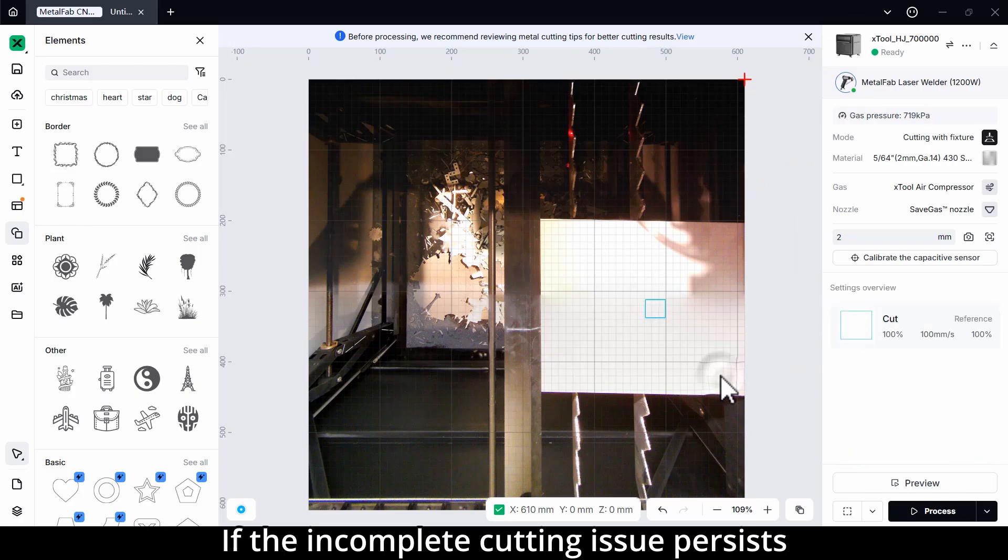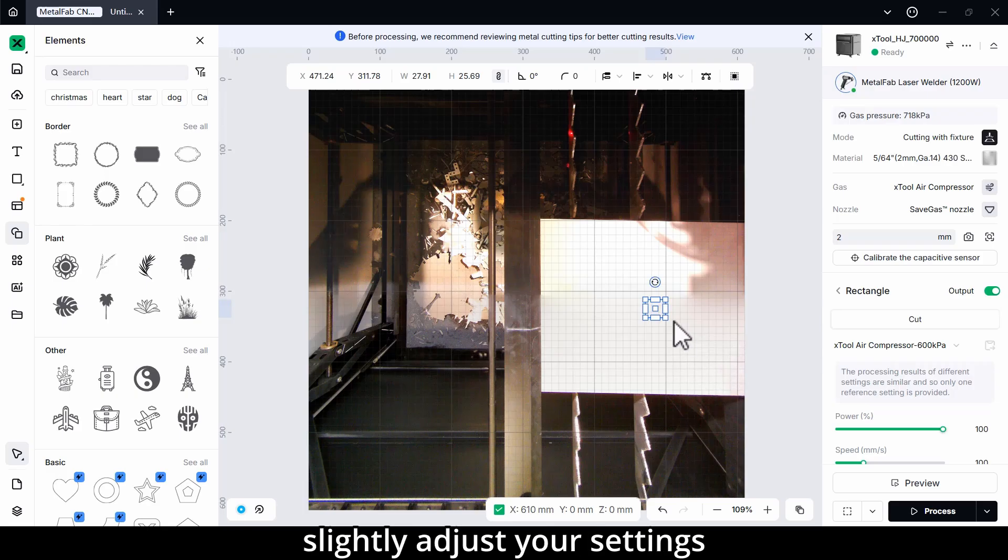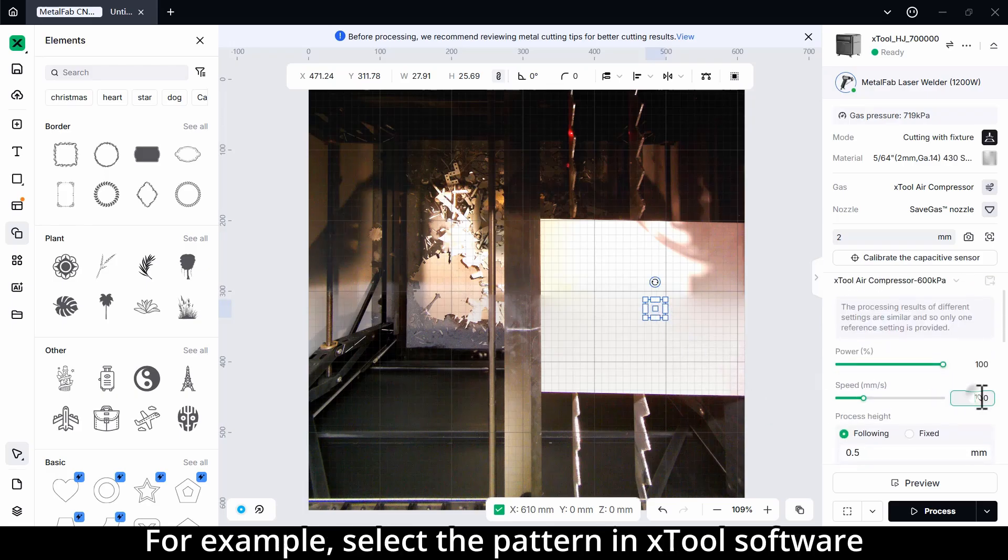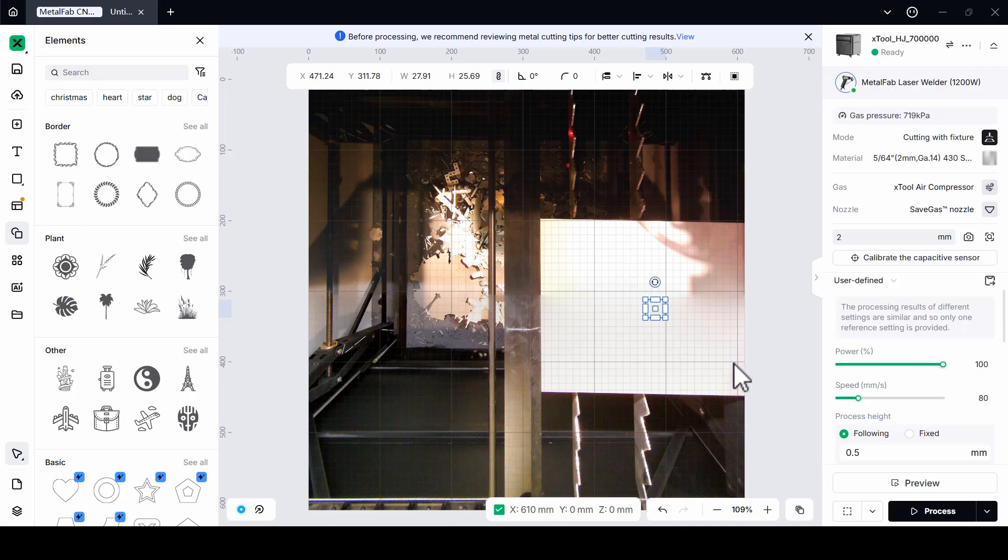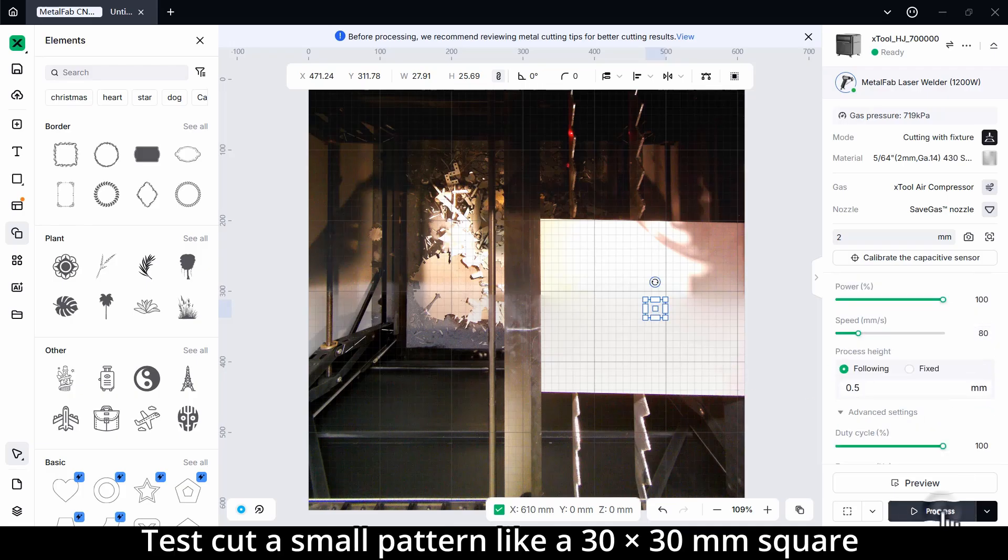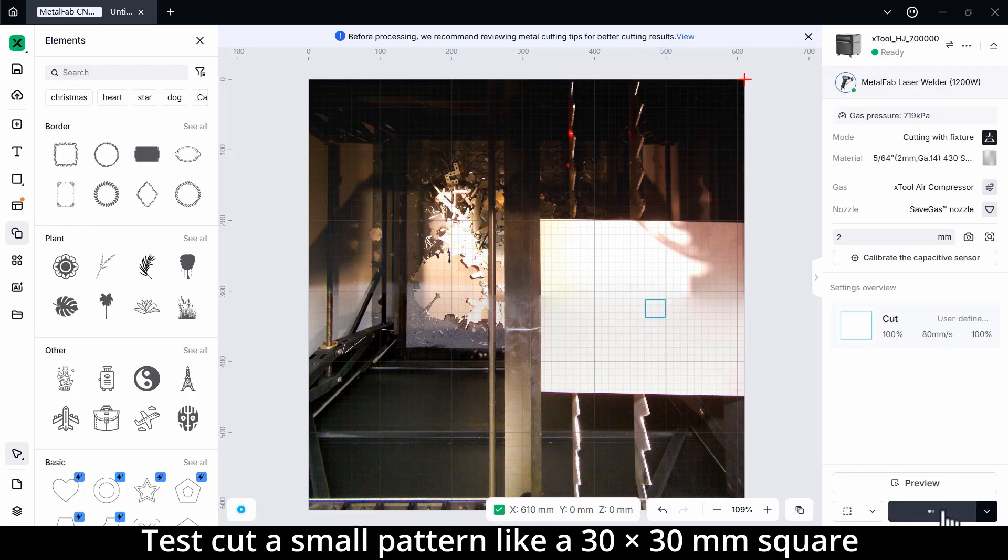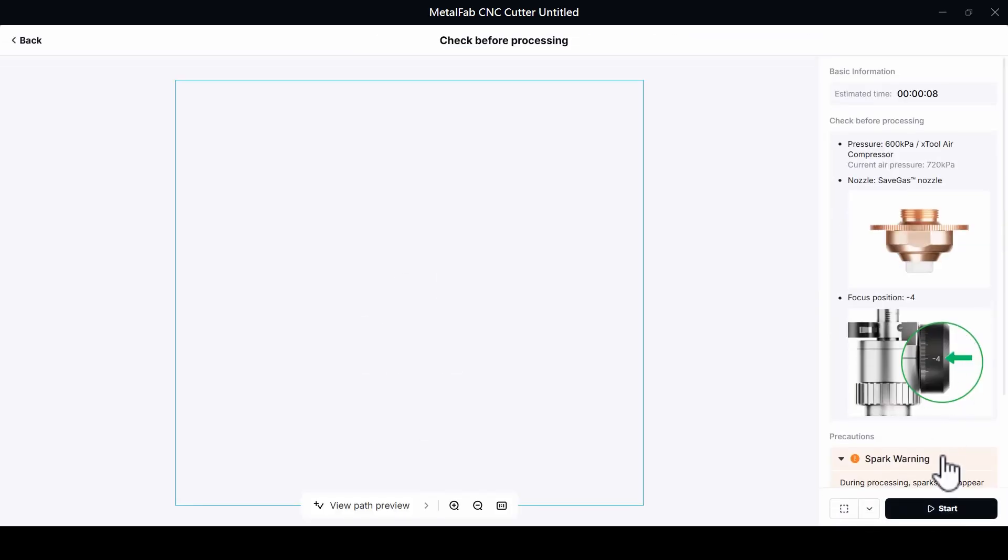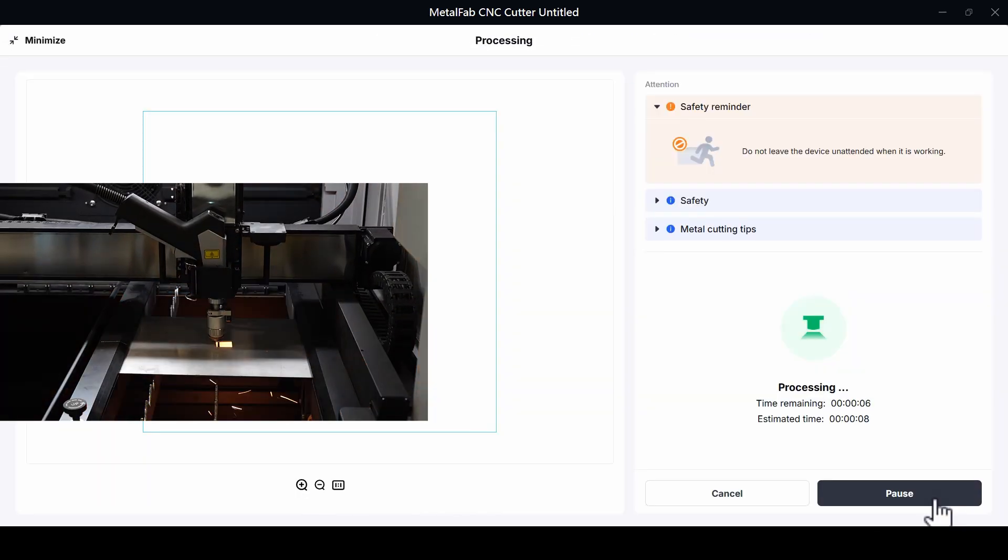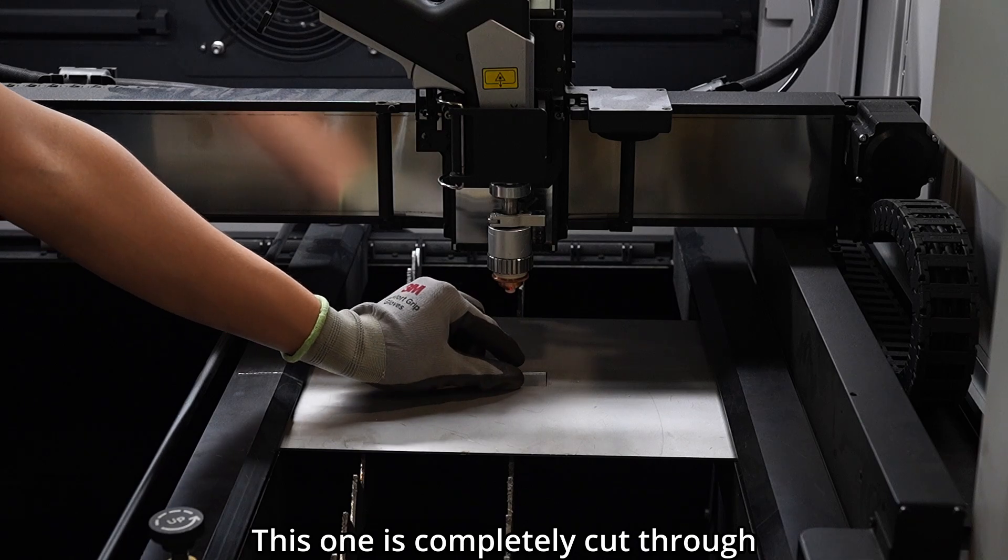If the incomplete cutting issue persists, slightly adjust your settings. For example, select the pattern in Xtool software, lower the cutting speed, test cut a small pattern like a 30 by 30 mm square. This one is completely cut through.